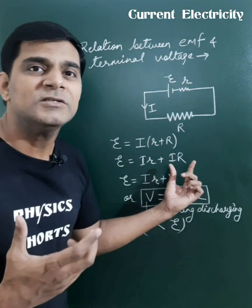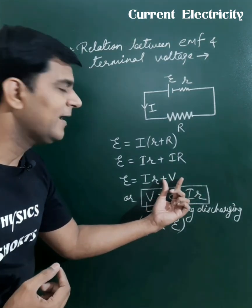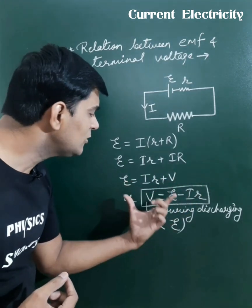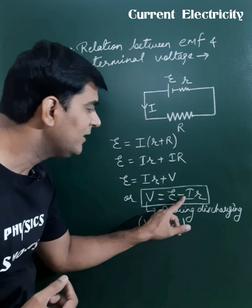So this IR will be the terminal voltage and we can write it as V. So this expression of V we can find as E minus IR.